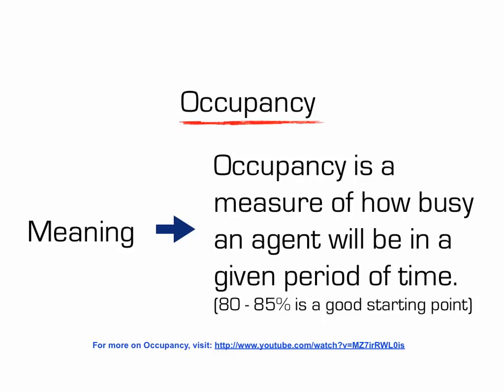Let's talk about occupancy — a very important measure. This is where you determine how busy your agents are going to be in an hour. The higher the occupancy, the less time they have between calls. For example, 50 minutes in a 60-minute period equals 83.3% occupancy. A good starting point is 80–85% occupancy for a team working an expected call volume. If you have a new project and you're unsure, lower occupancy to around 70%, then adjust from there.